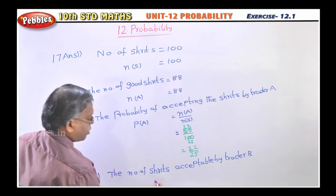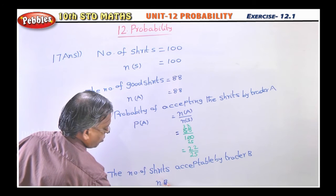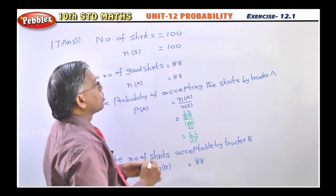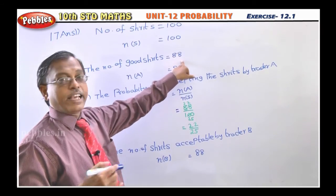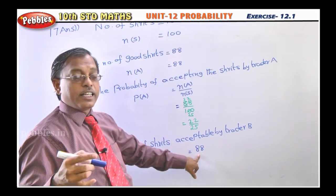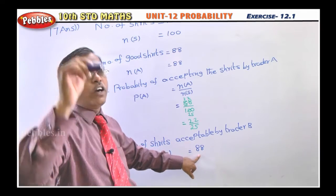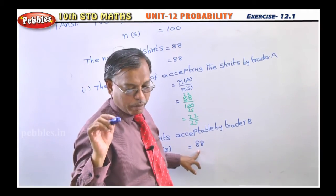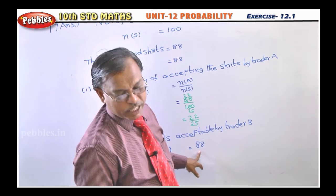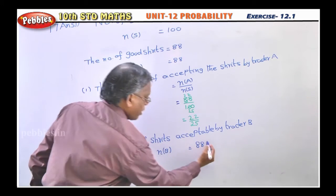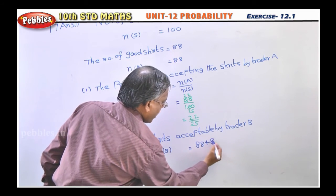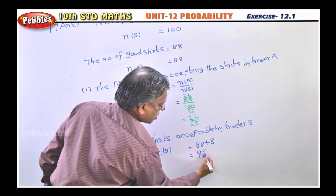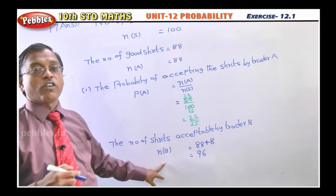For n(B): trader B will accept the good ones, which is 88. Apart from the good ones, he will also accept shirts with minor defects. How many shirts have minor defects? Given in the problem as 8. So we add 8 more shirts: 88 + 8 = 96. So n(B) = 96.